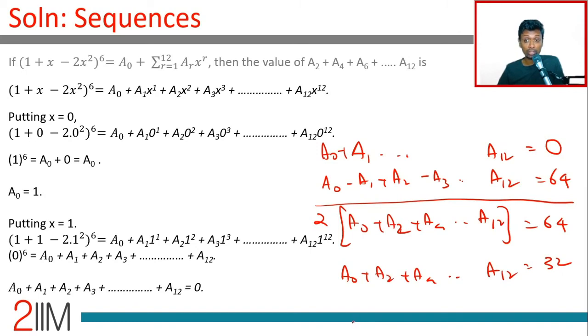But you want to find A₂ + A₄ + A₆ all the way till A₁₂. A₀ = 1 which we already found, so the remaining is 31.